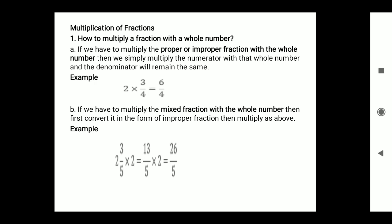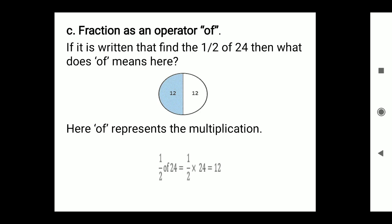Fraction as an operator: if it is written 'find 1/2 of 24', what does 'of' mean here? It means multiplication. So 1/2 of 24 equals 1/2 × 24, which equals 24/2, which equals 12. That means half of 24 is 12.